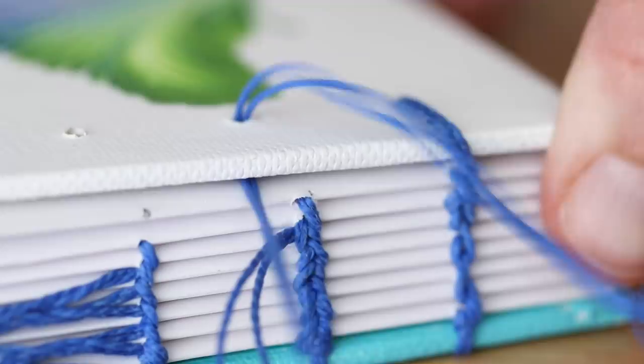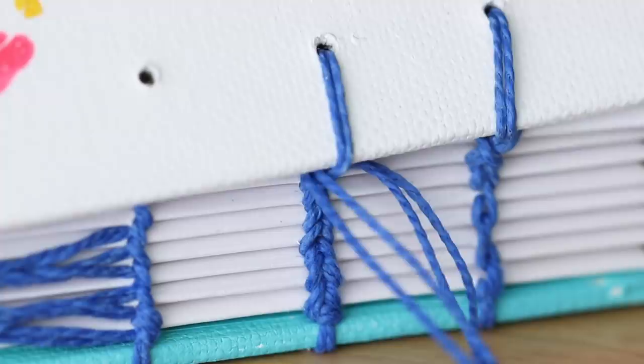For the next binding hole, I'm going to loop around the previous stitch first, and then onto the cover, looping behind the stitch I made, and into the signature.